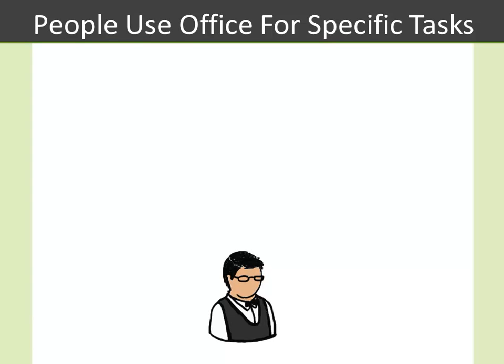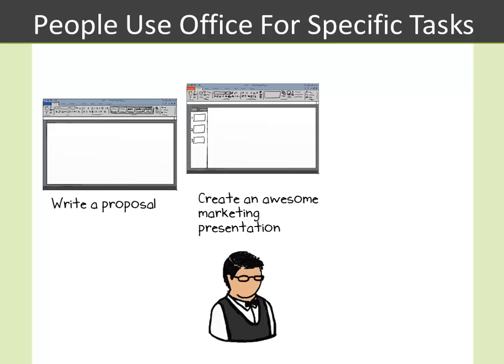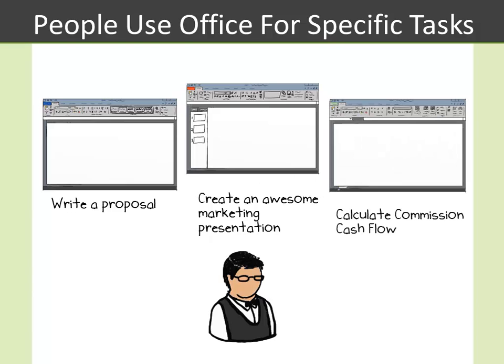People use Office for all sorts of tasks in order to get their work done. For example, they use Word to write proposals, they use PowerPoint to create awesome marketing presentations, and then they use Excel to calculate their commissions and figure out how big their payday will be.